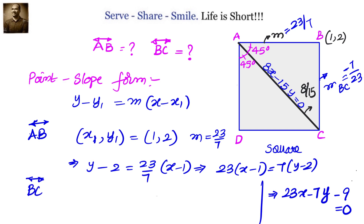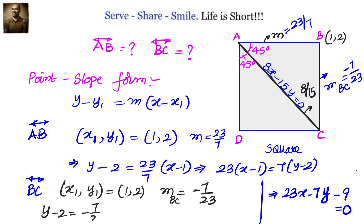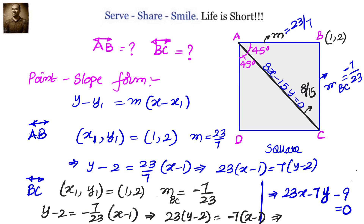For the equation of BC, we use slope minus 7 by 23 through point (1, 2): y minus 2 equals (minus 7/23)(x minus 1), giving minus 7(x minus 1) equals 23(y minus 2), which simplifies to 7x plus 23y equals 53. So the equations of AB and BC are 23x minus 7y equals 9 and 7x plus 23y equals 53 respectively. Substituting (1, 2) into both confirms these are correct.